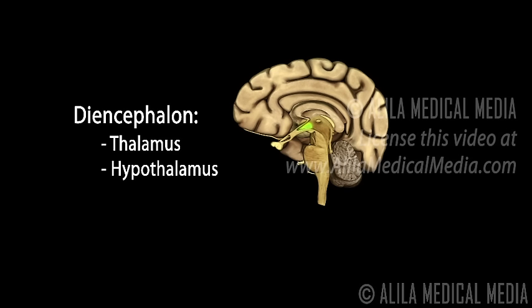The hypothalamus is the major control center of the autonomic nervous system and plays a central role in homeostatic regulation. It links the nervous system to the endocrine system via the pituitary gland. It also contains nuclei involved in regulation of body temperature, food and water intake, sleep and wake cycle, memory, and emotional behavior.